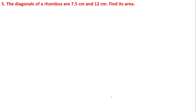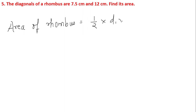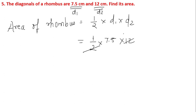This was the question given as homework in the previous class, so let's solve it now. The diagonals of a rhombus are given as 7.5 centimeters and 12 centimeters, and we have to find the area of the rhombus. The area of a rhombus is calculated using the formula: half of d1 into d2. So putting in the values — half of 7.5 into 12 — that gives 7.5 into 6, which equals 45 centimeter square.